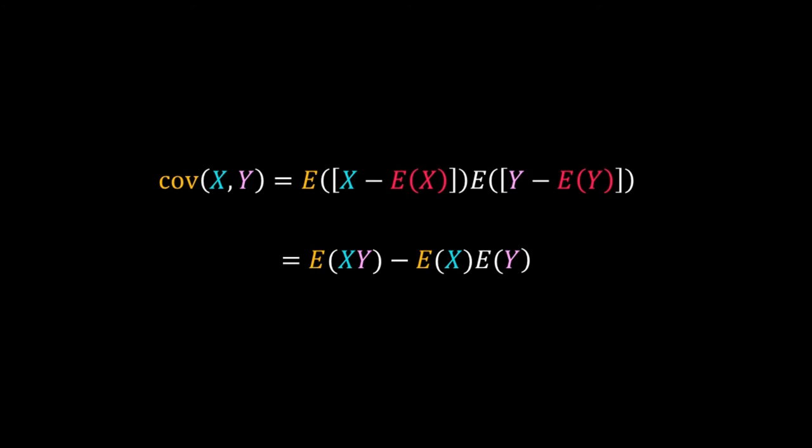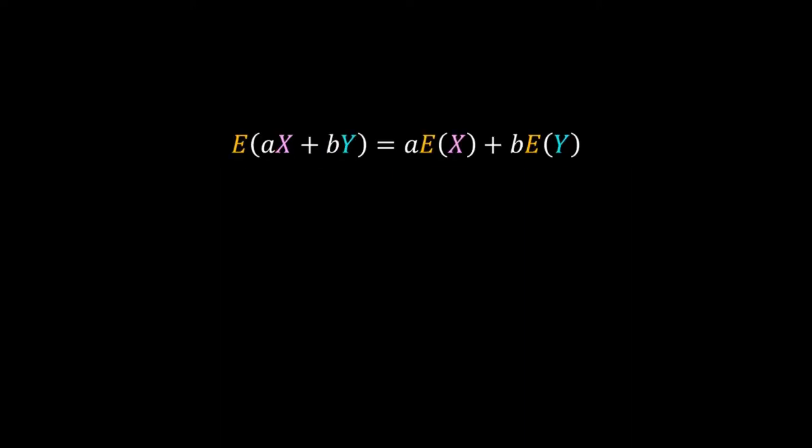For any two random variables x and y, the covariance is defined as E[XY] minus E[X] times E[Y]. Here is another important theorem: the expectation of aX + bY, where x and y are random variables and a and b are constants, equals a times E[X] plus b times E[Y].